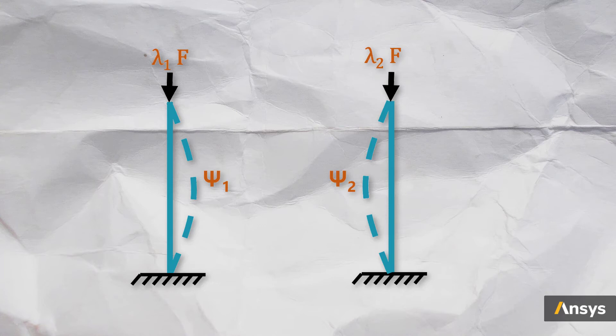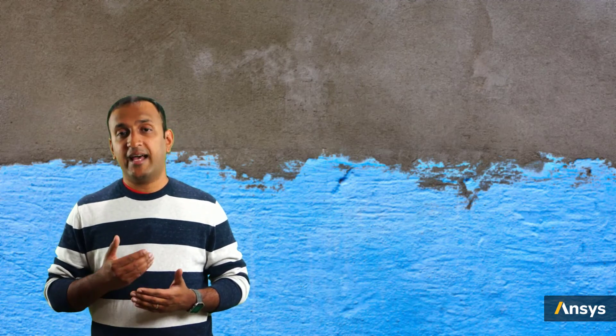So, the eigenvalue analysis predicts all possible modes of buckling at the buckling load. And since we are not interested in knowing the structure's behavior beyond this bifurcation point, we will not run into force imbalance issues either. This way, an eigenvalue analysis helps us in performing a buckling analysis of structure.